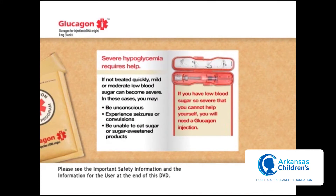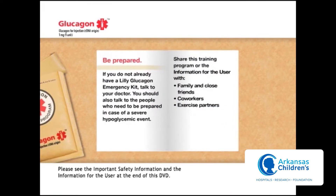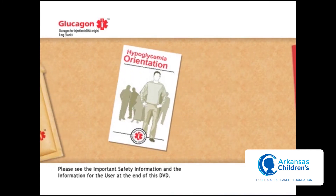If not treated quickly, mild or moderate low blood sugar can become severe. In severe cases, you may become unconscious or experience seizures or convulsions, and therefore may be unable to take any sugar by mouth. If your low blood sugar gets so severe that you cannot help yourself, you'll need a glucagon injection. Talk to your doctor about getting a Lilly glucagon emergency kit, and share this training program with family, friends, co-workers, and exercise partners so they'll be prepared in a severe hypoglycemic emergency.